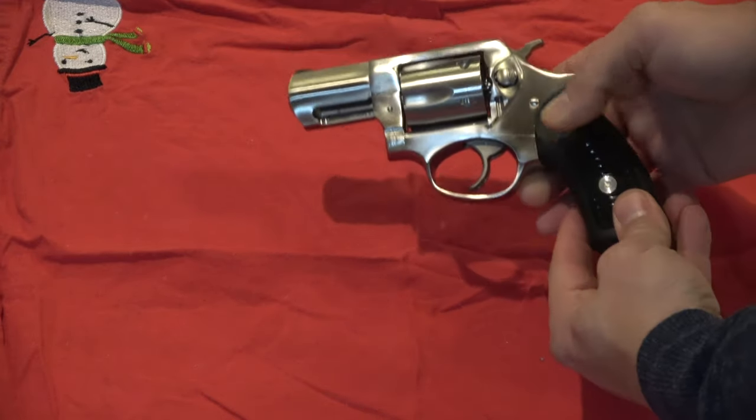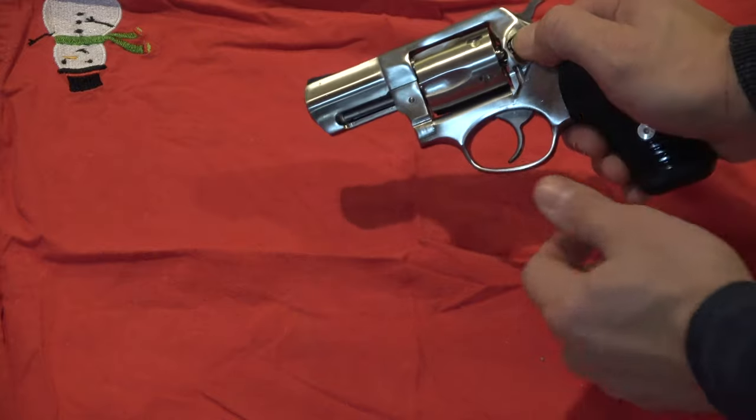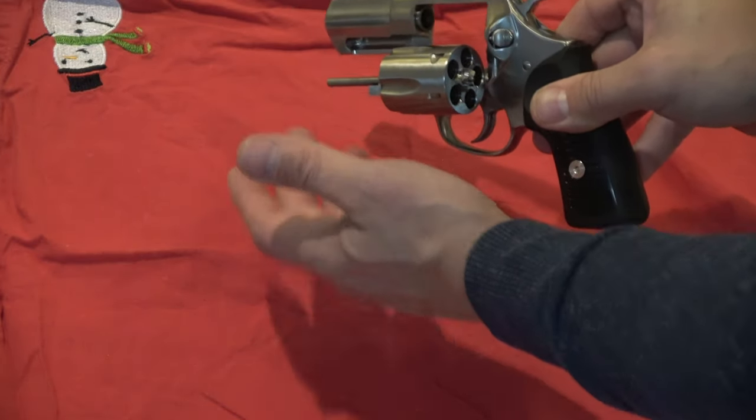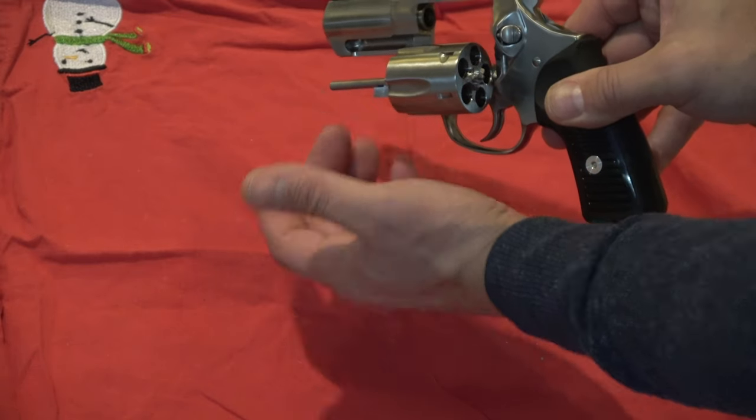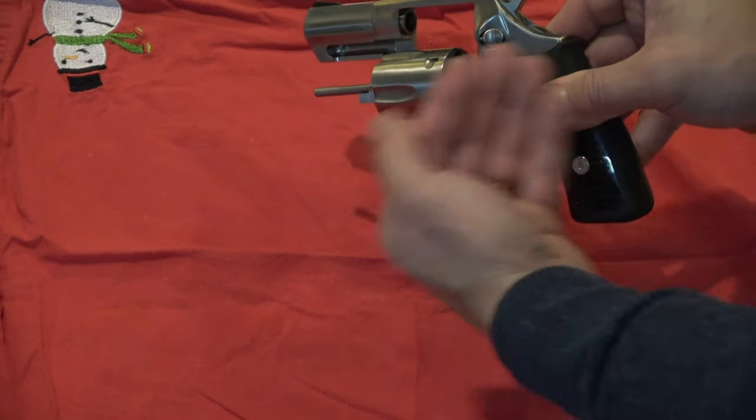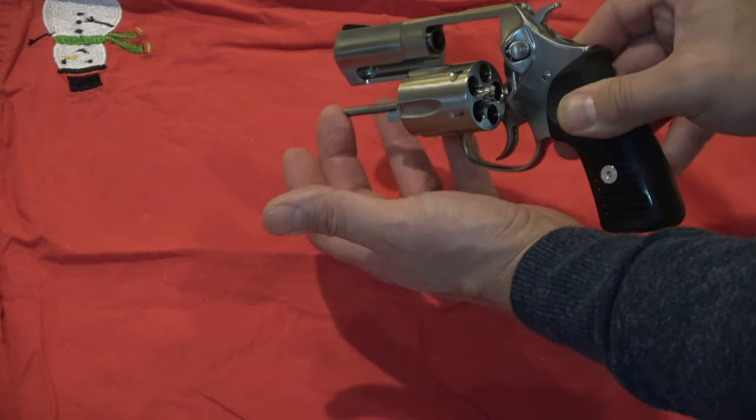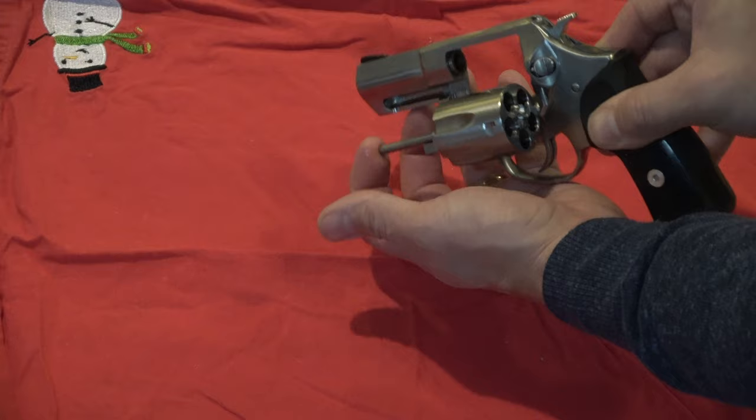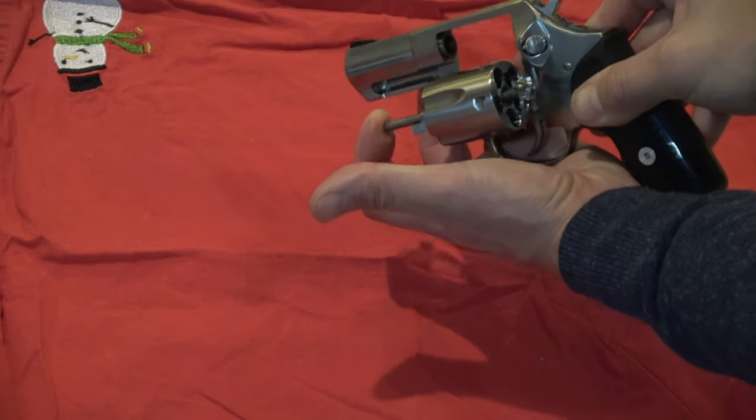So basically what you do, most of you know, you depress this button here, cylinder opens up, and then you push on this rod here that will bring the ejector forward and push out your spent cartridges or your unspent cartridges. And it's very stiff. So I'm pushing on it pretty hard right here and then it gives.